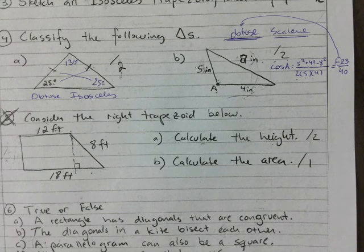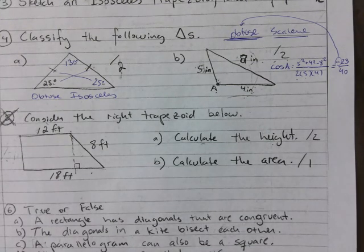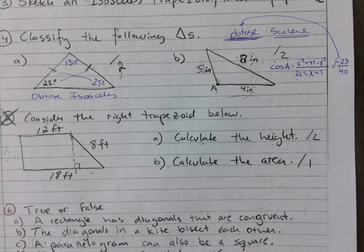If you didn't do any work I would say one out of two, because it does look obtuse. On the test, if there are numbers, calculate. I'll probably make it look ambiguous — like it could be a 90 — so you'll need to calculate.